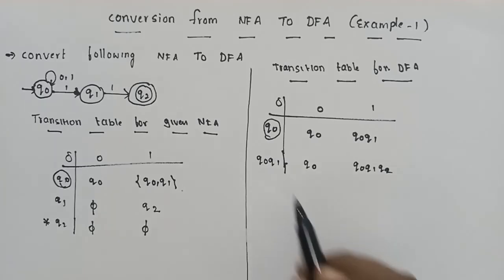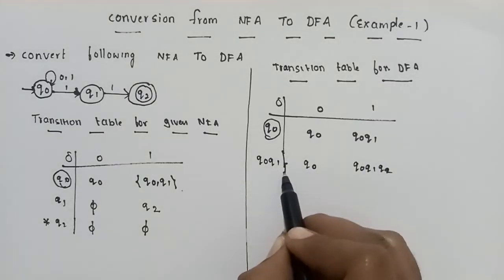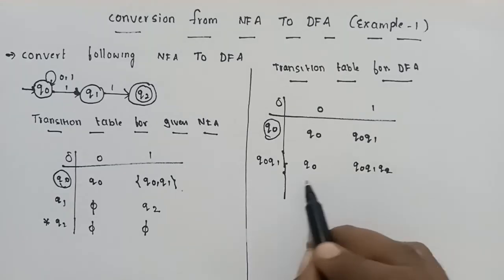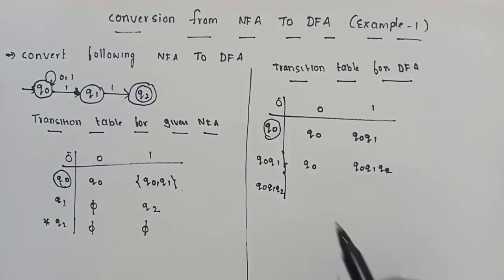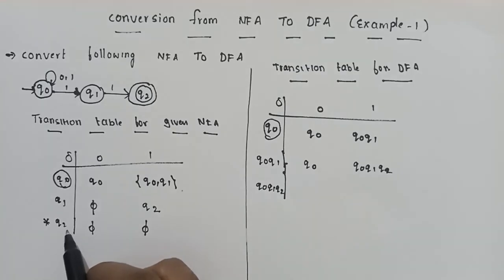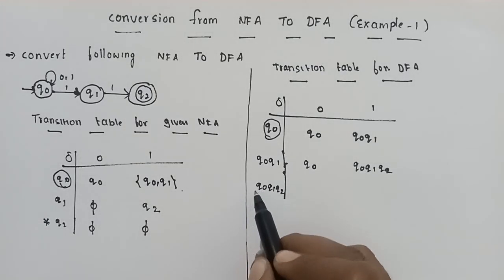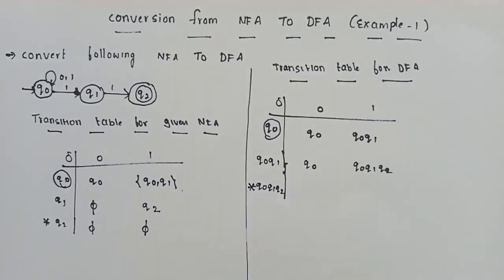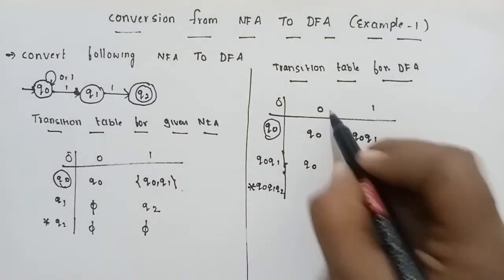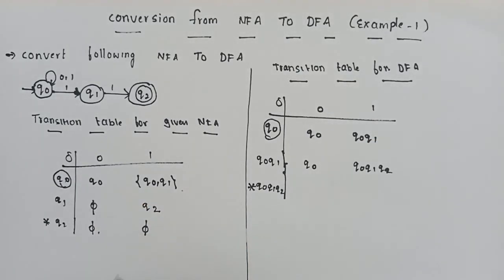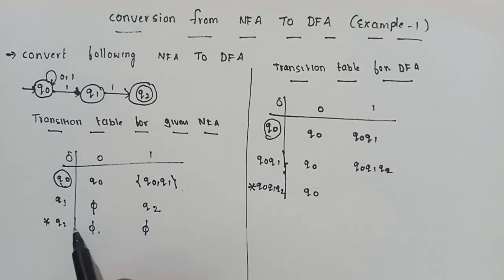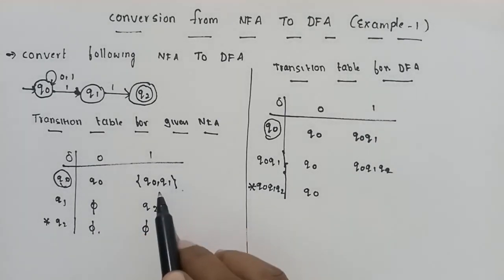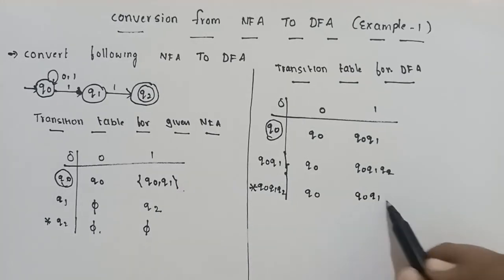We now expand the new state {Q0, Q1, Q2}. Since Q2 is present in this set, {Q0, Q1, Q2} is a final state in the DFA. For input 0: Q0 on 0 = Q0, Q1 on 0 = empty, Q2 on 0 = empty — union gives Q0. For input 1: {Q0, Q1} on 1 = {Q0, Q1, Q2}, again giving {Q0, Q1, Q2}.